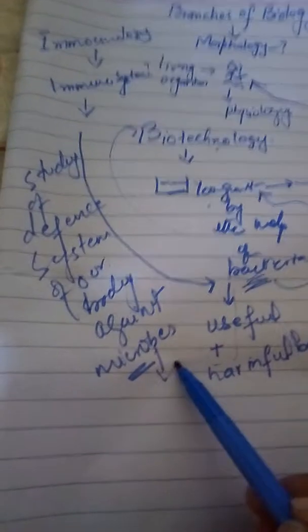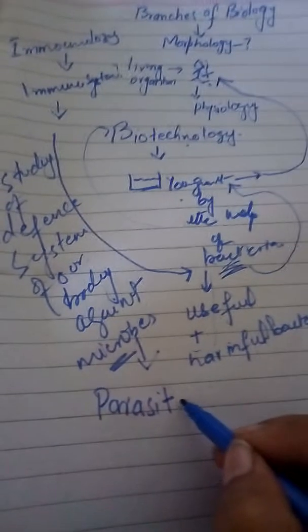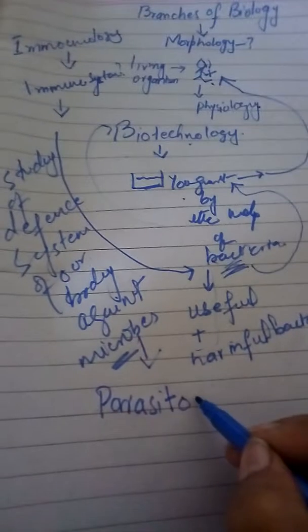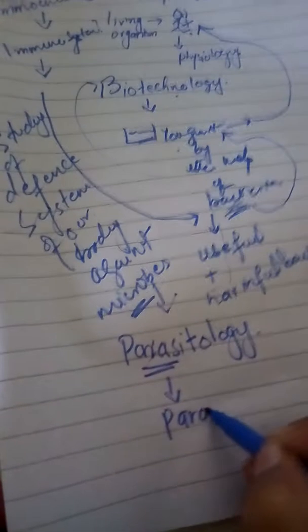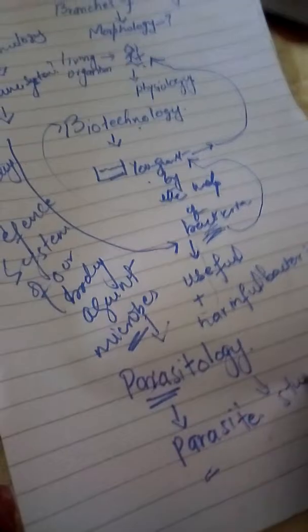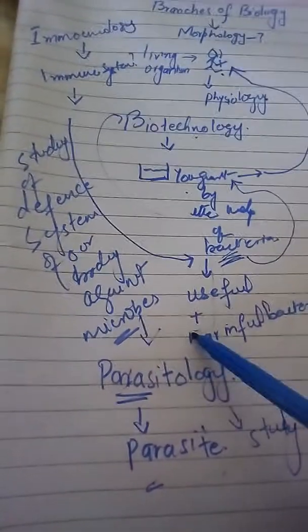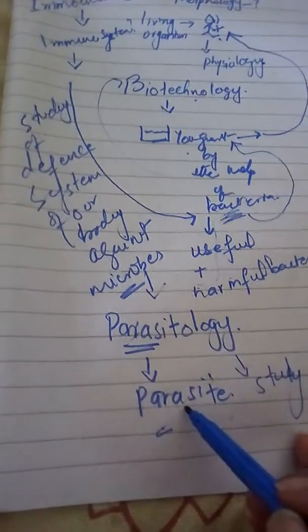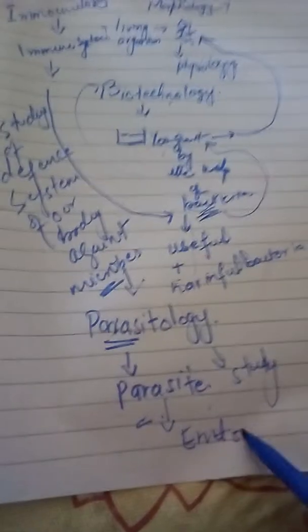When we talk about microbes, it leads to another branch of biology. The study of the life of parasites is called parasitology. A related branch is also called entomology — entomology is the study of insects, including ants.